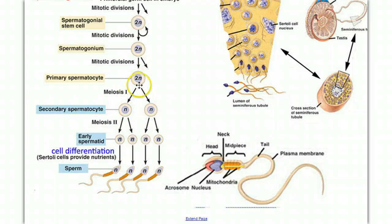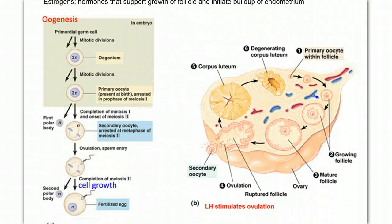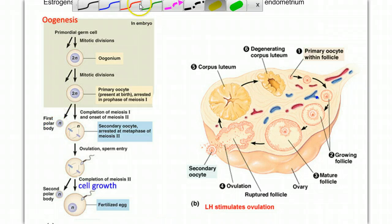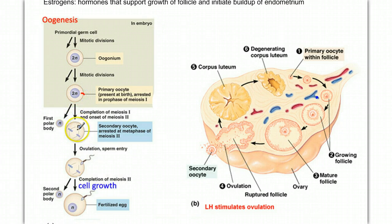Meiosis, or reduction division, is a type of nuclear division that involves two rounds of cell division, so that one cell becomes two and two become four. The difference with oogenesis is that we have one diploid germ cell give rise to only one haploid gamete. At the first division, we do get an equal division of the nuclear material — one haploid nucleus and one haploid nucleus — however, we have a very unequal distribution of cytoplasm, so that we end up with one small cell called a polar body and one large cell called the secondary oocyte.